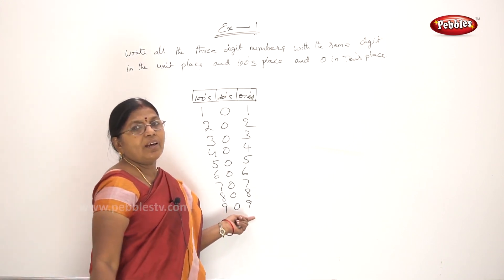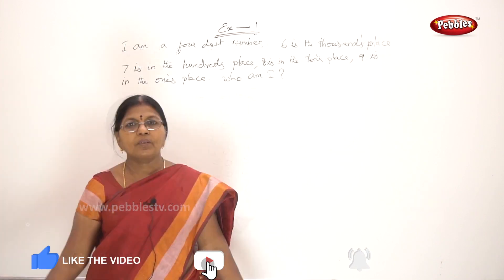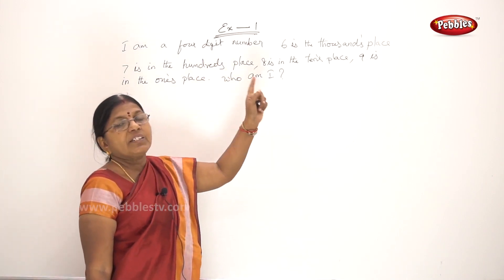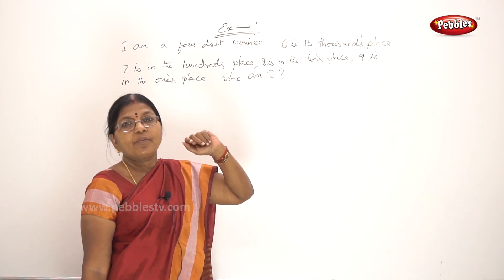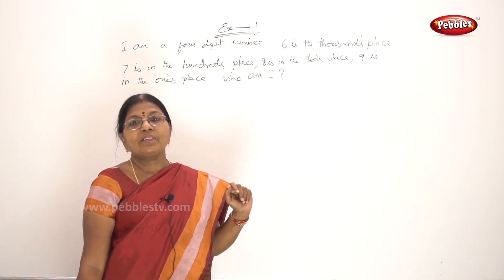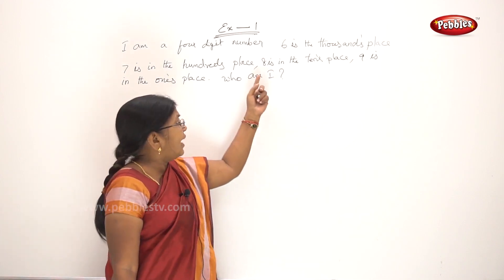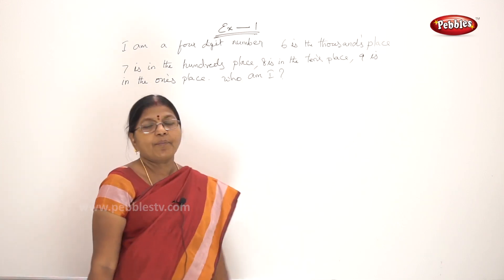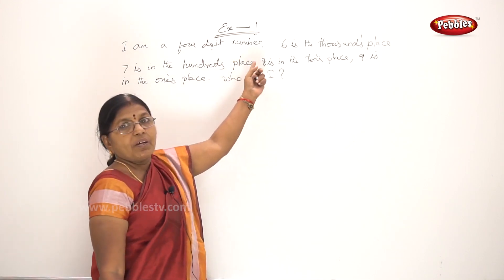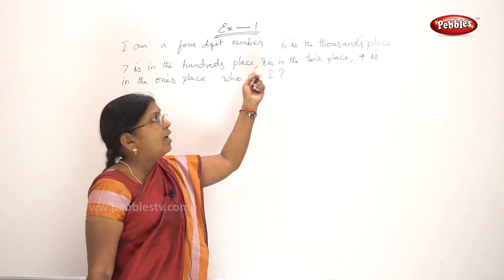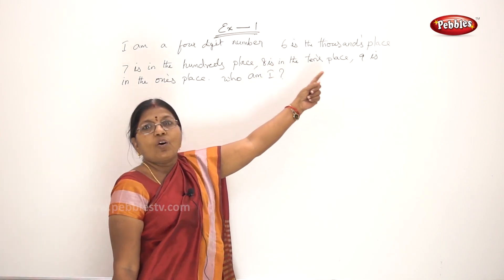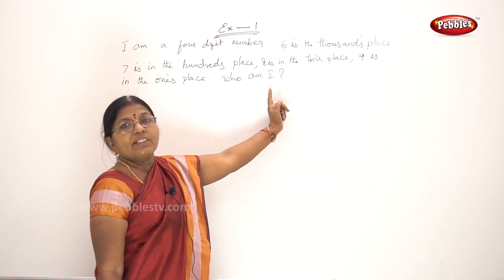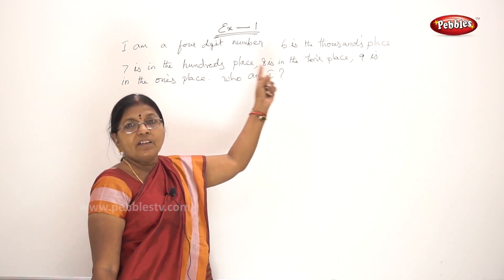I am a four-digit number. Six is in the thousands place. Seven is in the hundreds place. Eight is in the tens place. Nine is in the ones place. Who am I? This is a four-digit number with four places: ones, tens, hundreds, thousands.